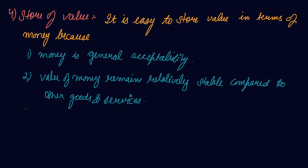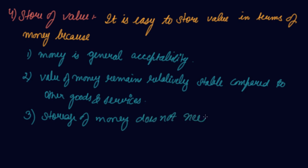The third reason is that storage of money does not need much space. If you have wheat, it will take a lot of space to store, but if you exchange your wheat in terms of money, you can store money very easily. This function is also known as the asset function of money.